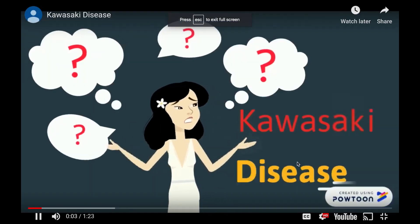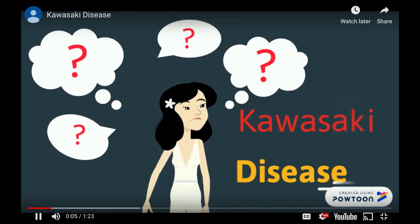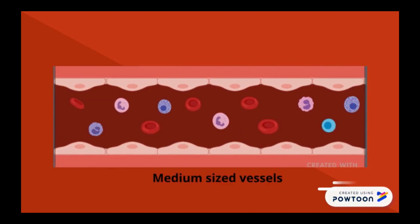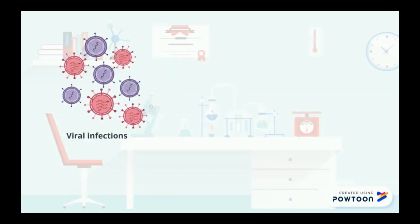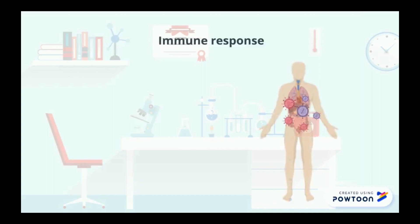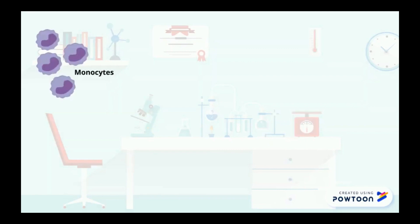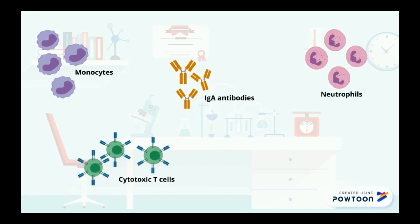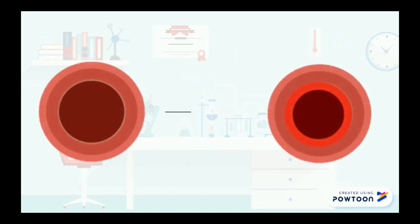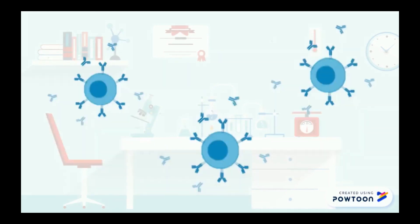Kawasaki disease involves inflammation of blood vessels throughout the body — this makes it a systemic vasculitis disease. It mainly affects medium-sized blood vessels. Infections such as viral infections and strep throat are thought to be contributors. An immune response is initiated when there is an infection in the body, involving monocytes, IgA antibodies, neutrophils, and cytotoxic T cells.